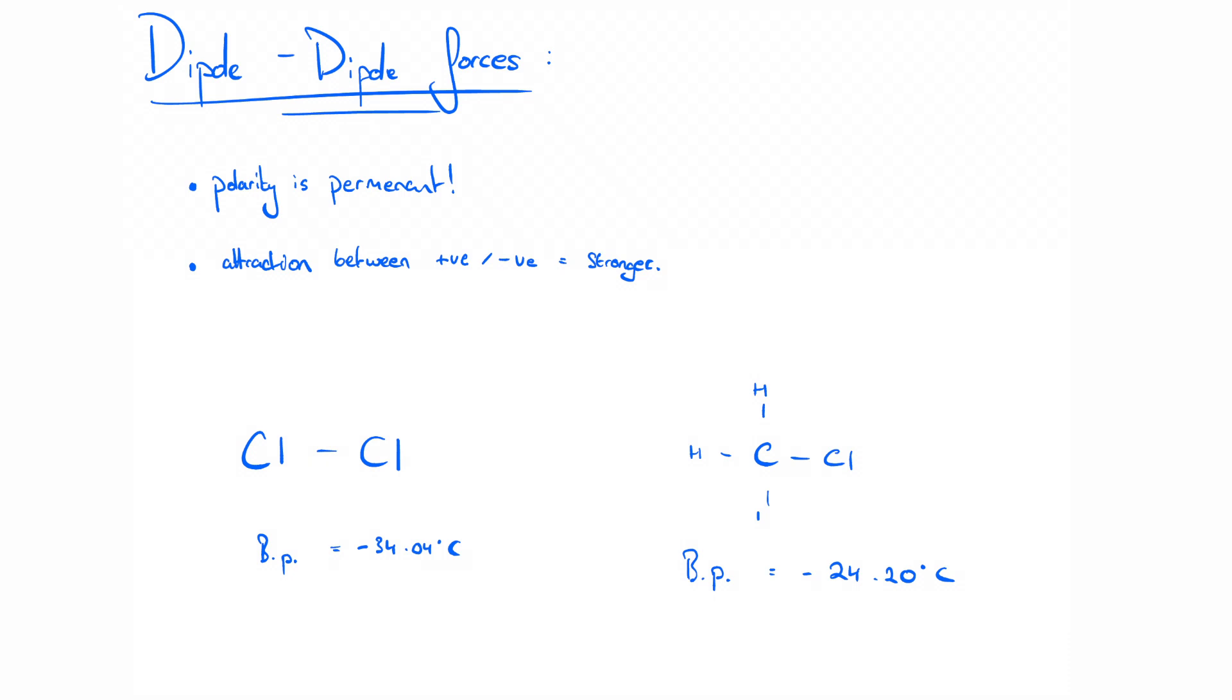If we look at chlorine and compare its boiling point to something similar in size, but polar, like chloromethane, you can see the boiling point's actually higher on the slightly smaller yet polar molecule.